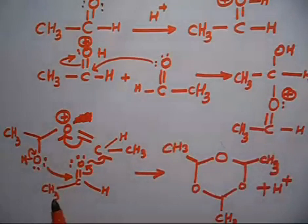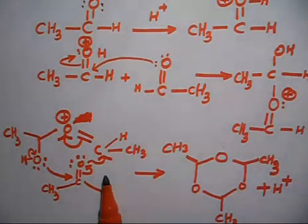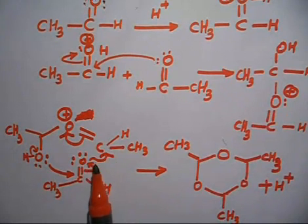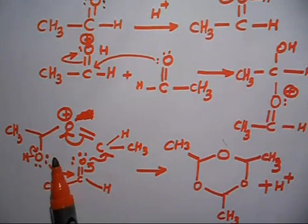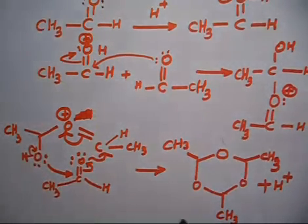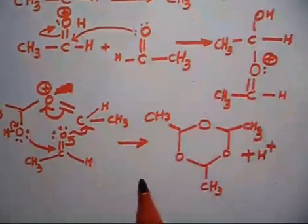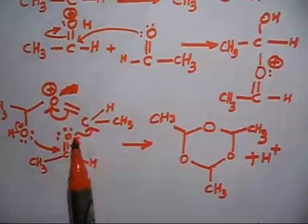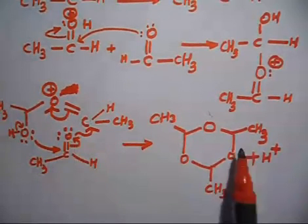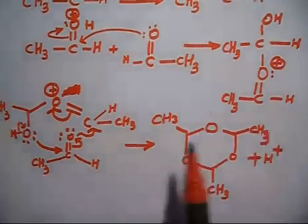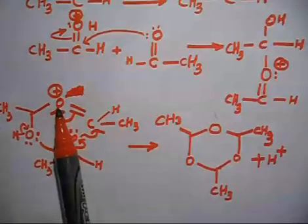Now take the third molecule of CH₃CHO. The oxygen lone pair can attack here; at the same time, this oxygen can attack here, and we lose H⁺. If you follow these steps, you get the cyclic product — paraldehyde. Each carbon in the ring is connected to oxygen, and each carbon carries a CH₃ group and an H; the oxygens now bear no charge.